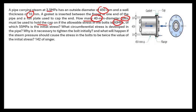The initial stress in the bolts is 55 megapascal. What circumferential stress develops in the pipe? And why is it necessary to tighten the bolts initially?